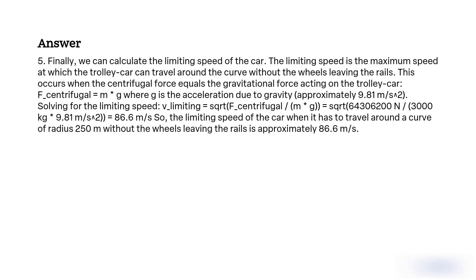Finally, we can calculate the limiting speed of the car. The limiting speed is the maximum speed at which the trolley car can travel around the curve without the wheels leaving the rails. This occurs when the centrifugal force equals the gravitational force acting on the car: F_centrifugal = m × g, where g ≈ 9.81 m/s². Solving for the limiting speed: v_limiting = √(F_centrifugal / m × g) = √(64,306,200 N / (3,000 kg × 9.81 m/s²)) ≈ 86.6 m/s. So the limiting speed of the car travelling around a curve of radius 250 m without the wheels leaving the rails is approximately 86.6 m/s.